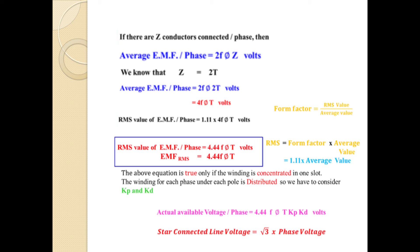The above equation is true only if windings are concentrated in one slot. The winding of each phase under each pole is distributed, so we have to consider Kp Kd values. The above equation must consider the Kp and Kd values.